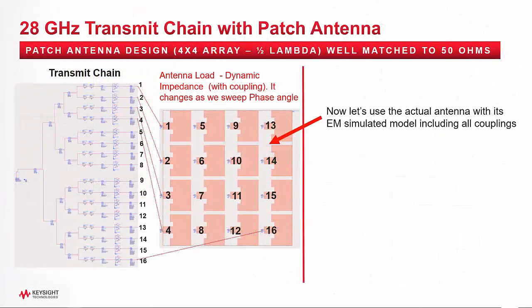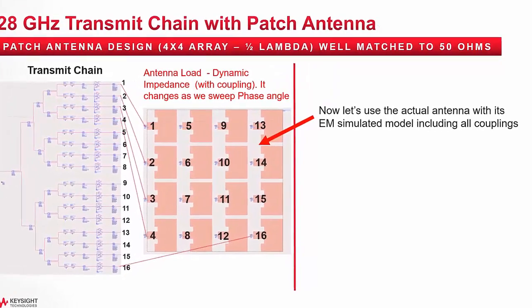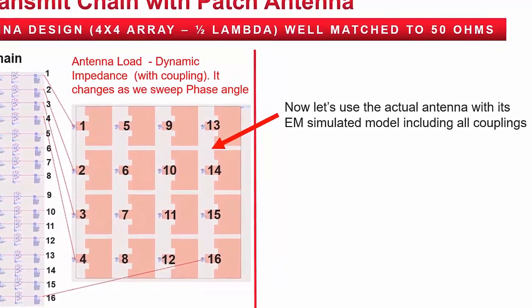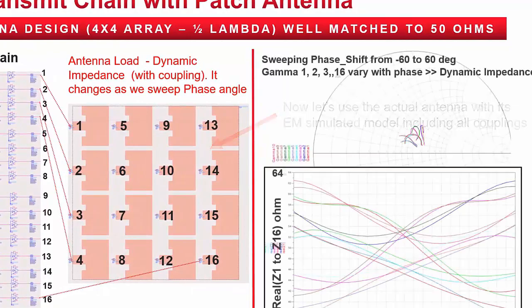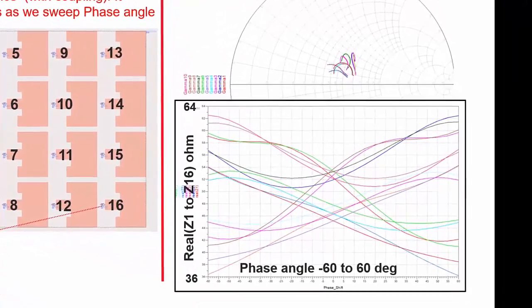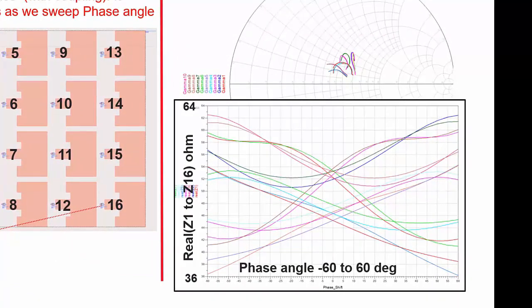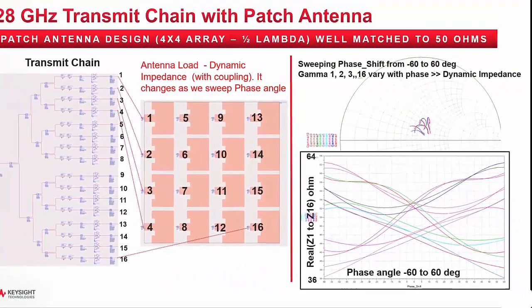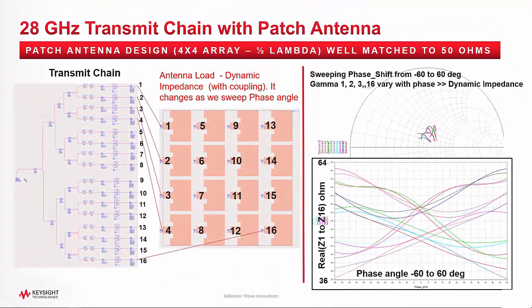But watch this. When I include the actual antenna EM simulation, including the coupling between all patches, look at the results. The impedance at the output of the PA interfacing the antenna is dynamically changing with the change in phase angle. That is due to the coupling effect between the patches, which dynamically changes the impedance as we change the scan angle. This dynamic impedance could result in significant reduction of output transmit power and could cause a blind spot — a very important issue in the design of 5G systems.